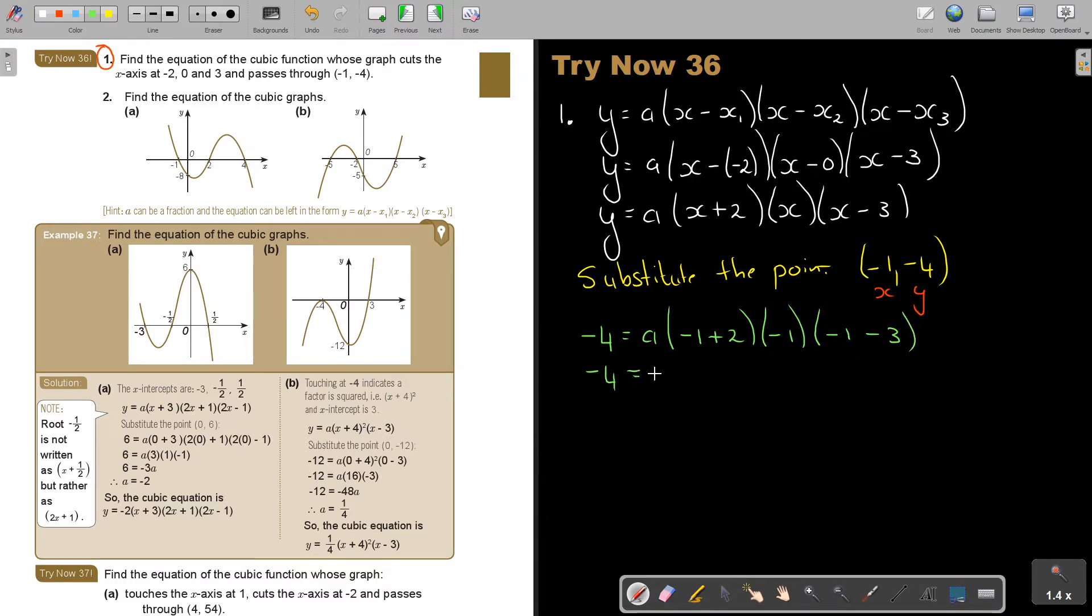So negative 4 equals a times 1 times negative 1 times negative 4. So negative 4 equals a. So it's going to be 4. So it's just going to be 4a. I think I'm going to write it as 4a. I divide by 4, so therefore, a is equal to negative 1.